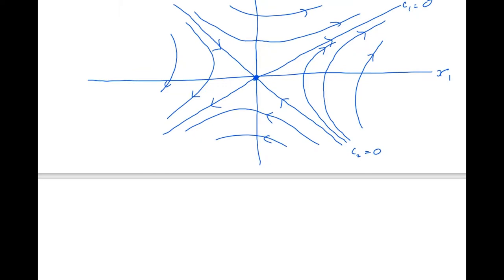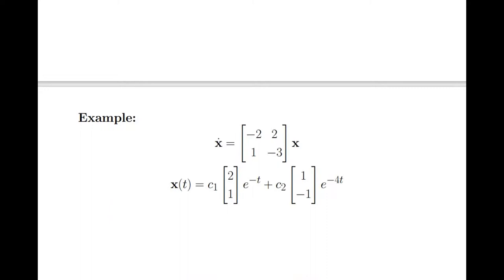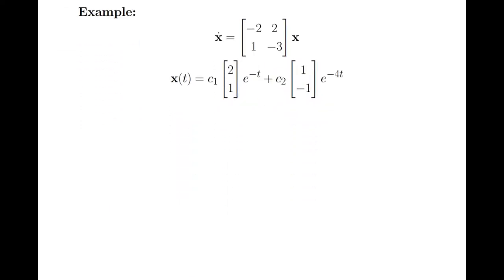Okay, let's do another one. So, let's draw the phase portrait of this 2x2 linear system. Coefficient matrix is [-2, 2; 1, -3]. It has two eigenvalues which are distinct and real. One of them is negative 1. One of them is negative 4. And here, we've skipped the step where you actually work out the eigenvalues and the eigenvectors and we'll just take that general solution to the differential equation as read and we want to draw the phase portrait.